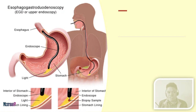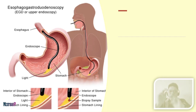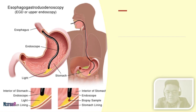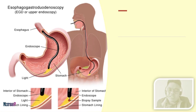This is your EGD. As you can see in EGD, a scope is inserted into the mouth of the patient, which is able to visualize the esophagus and stomach, and can even go as far as the common bile duct of the patient in the duodenum.